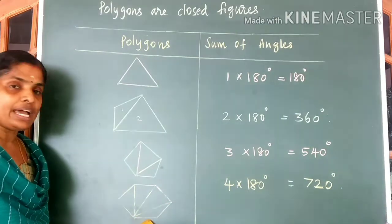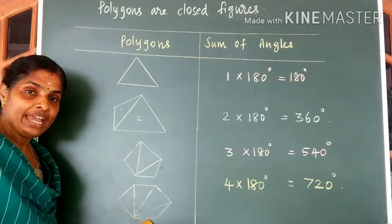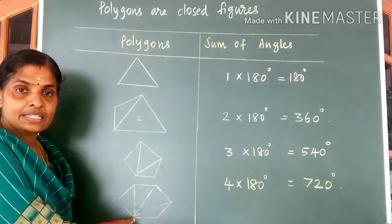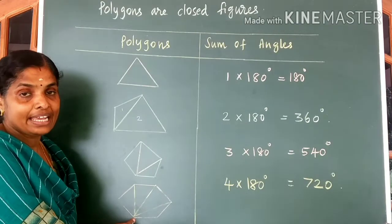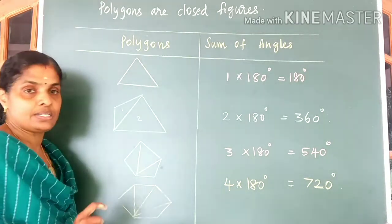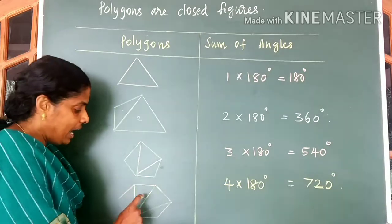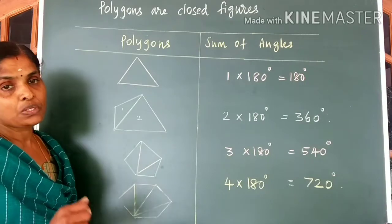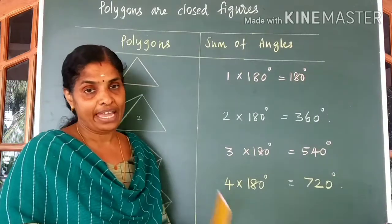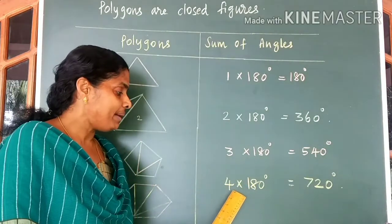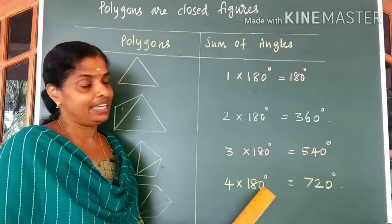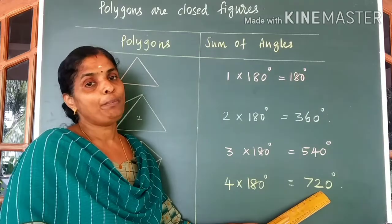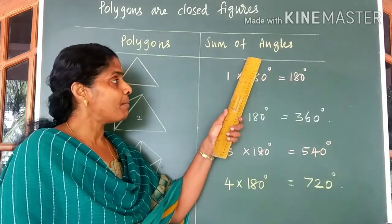The six-sided polygon is called a hexagon. Here again from one vertex, I have drawn diagonals to the opposite vertices so that I could divide this hexagon into four triangles. So the sum of all angles of a hexagon is 4 into 180 degrees, which is equal to 720 degrees.